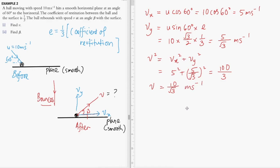To determine the direction at which it rebounds with respect to the horizontal plane, we apply the geometric property by taking tan β = vy/vx. So vy is 5√3/3 divided by vx which is 5, giving us tan β = 1/√3. Using a calculator, you will find that β = 30 degrees.